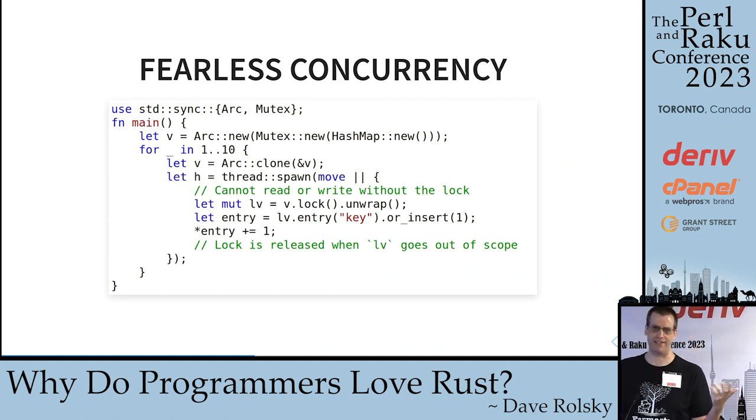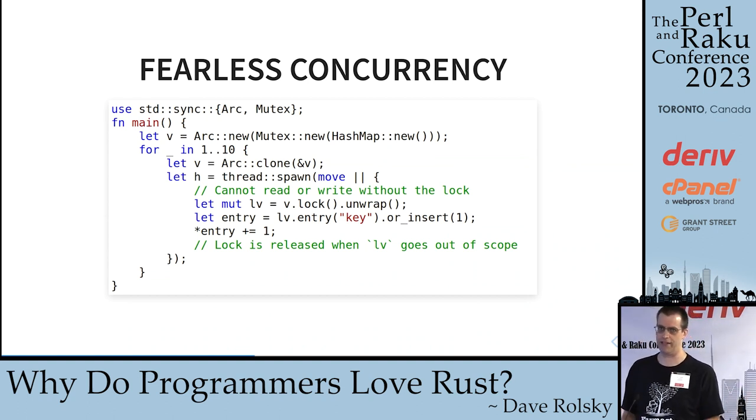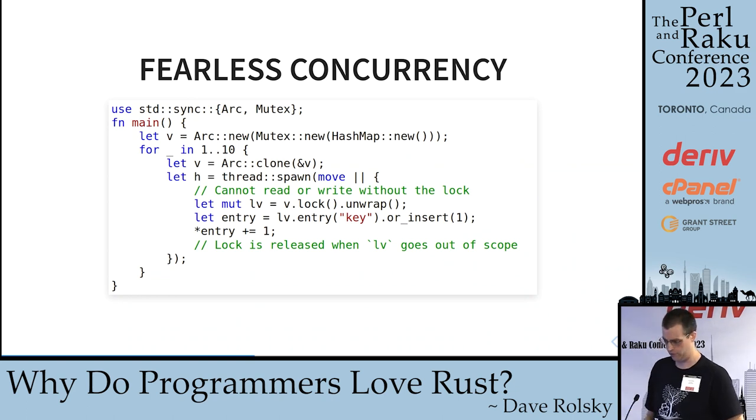Most other languages that have mutexes have you make a struct containing the mutex and the thing you want to protect, but nothing actually stops you from not using the mutex other than trying to be careful. With Rust, you just can't do it. I really enjoy this aspect of the system.